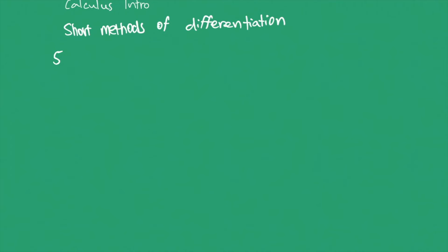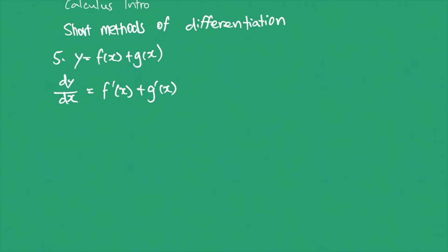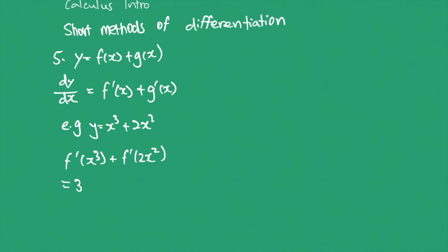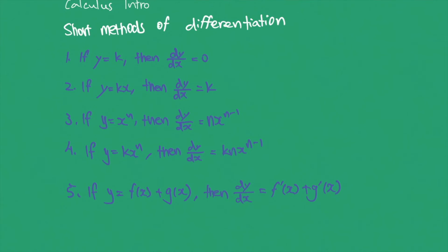For the last short method in this video, we have the sum of two functions. The derivative of a sum is the derivative of the first function plus the derivative of the other function. For example, if y equals x cubed plus 2x squared, it's just the derivative of x cubed plus the derivative of 2x squared, giving 3x squared plus 4x. That's all five short methods of differentiation. You can pause and take a screenshot or note them down.